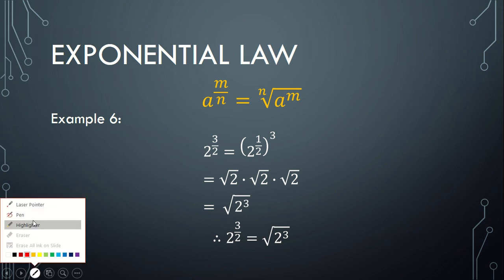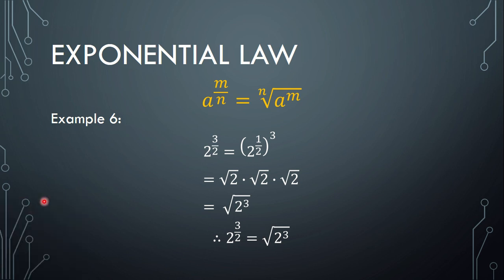Exponential law number 6. If we have a to the power of m over n, this is equivalent to a to the power of m to the root of n. The numerator m is the power, and the denominator of the exponent is the root.